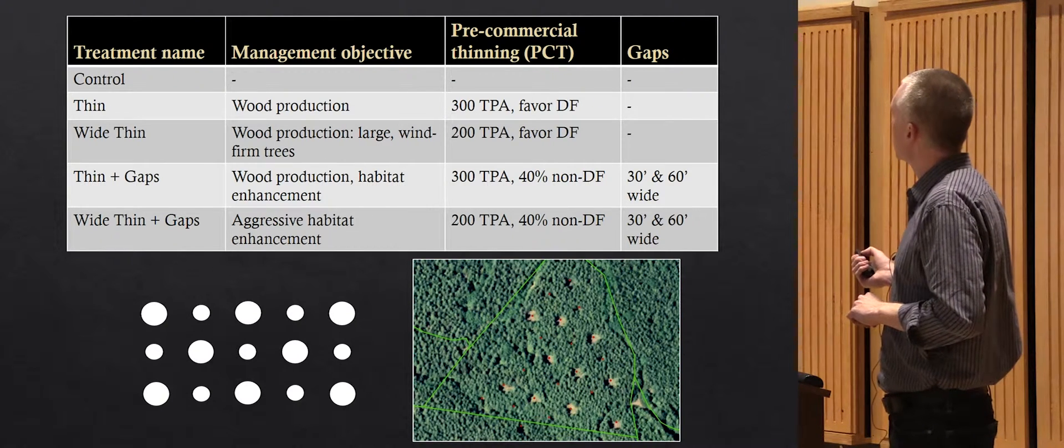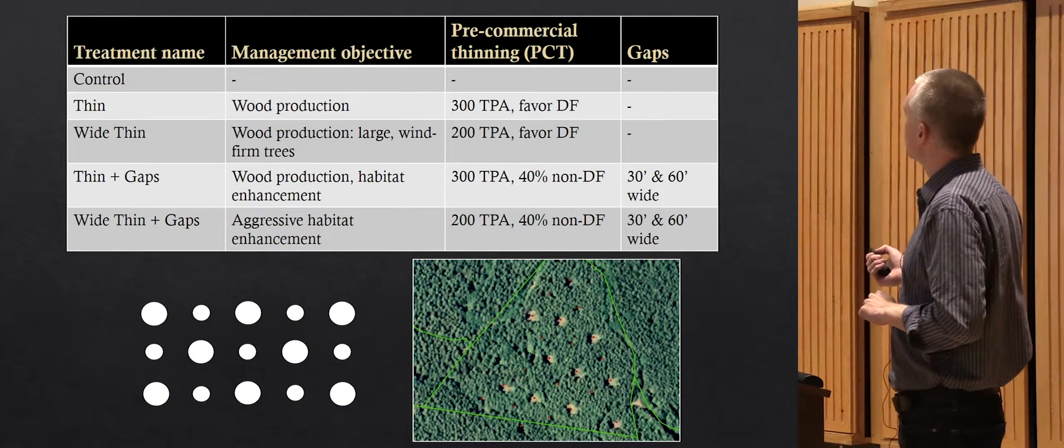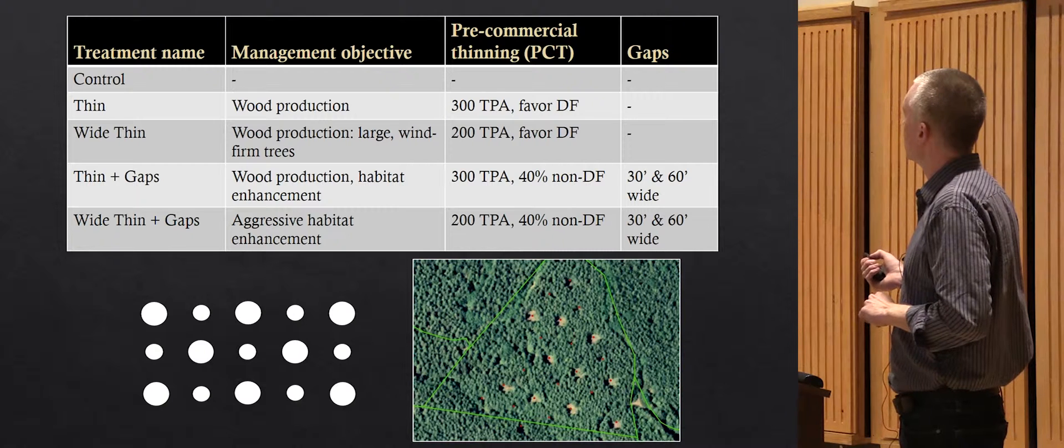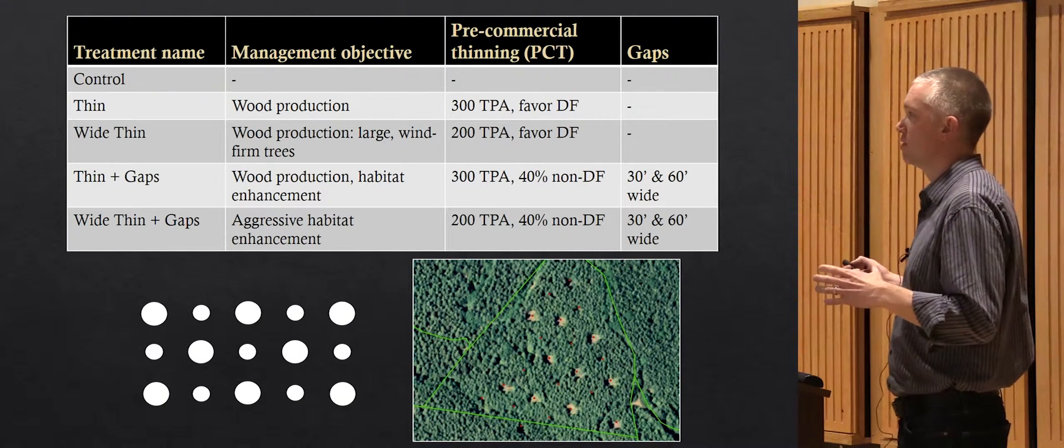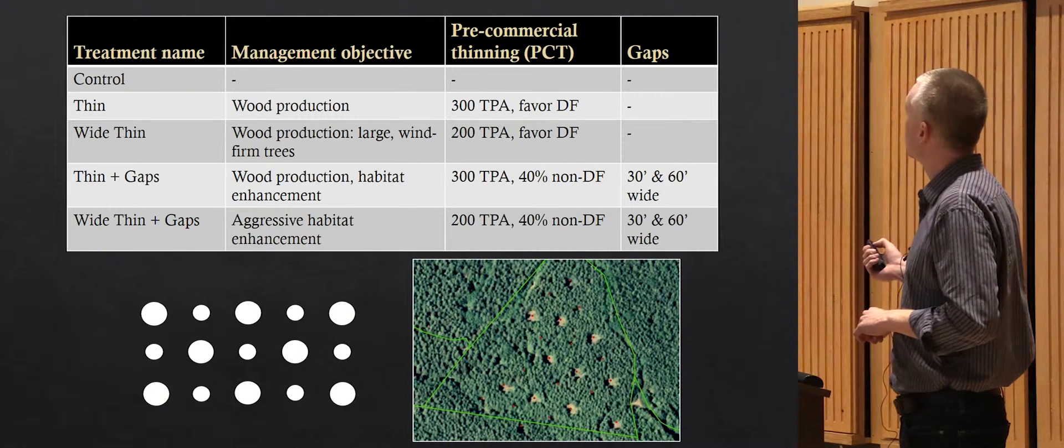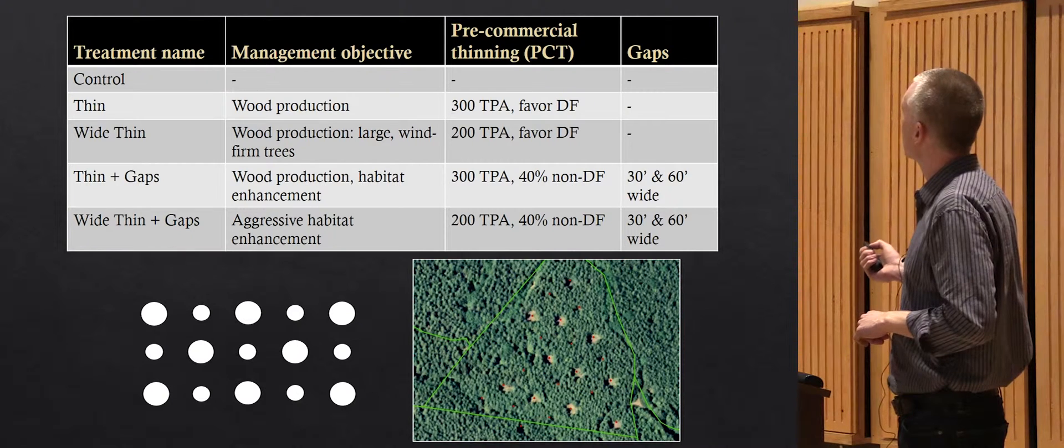Then there's three alternative thinning treatments that were tested. One is this wide thin treatment. The goal was wood production, getting larger diameter trees, more wind firm, more stable trees. So they only left 200 trees per acre and again favored Douglas fir when possible.